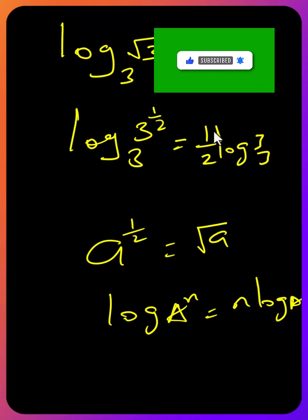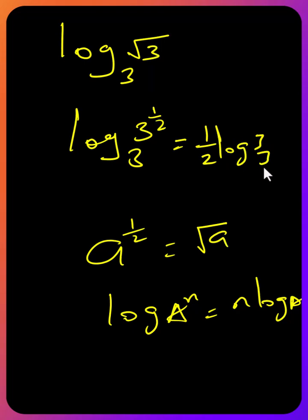So there is a property. This is log of a number to the same base as a number is 1. So this side is 1. So the result is half. All right.